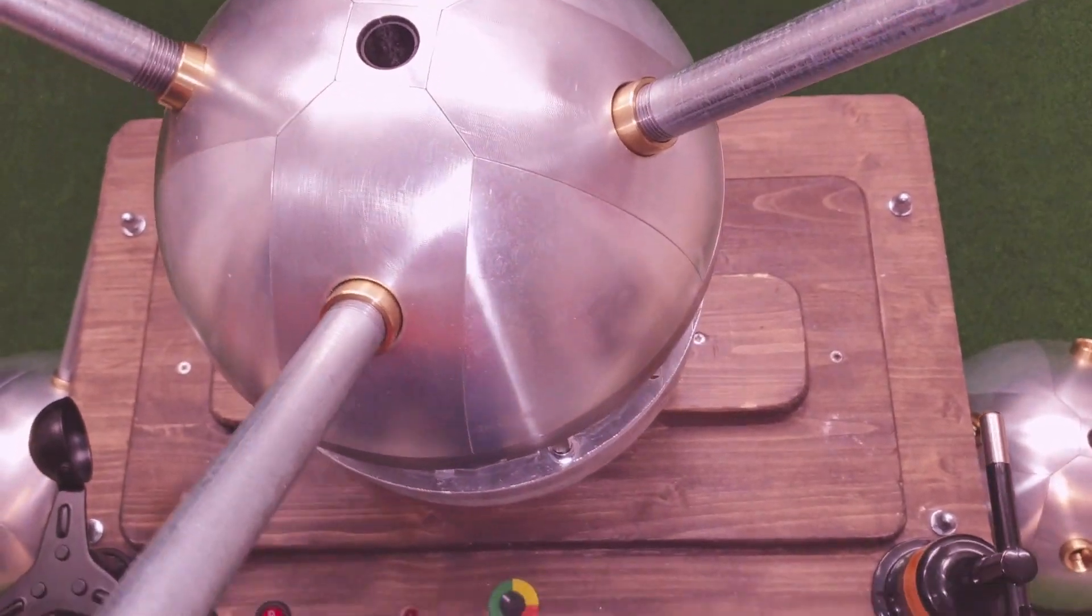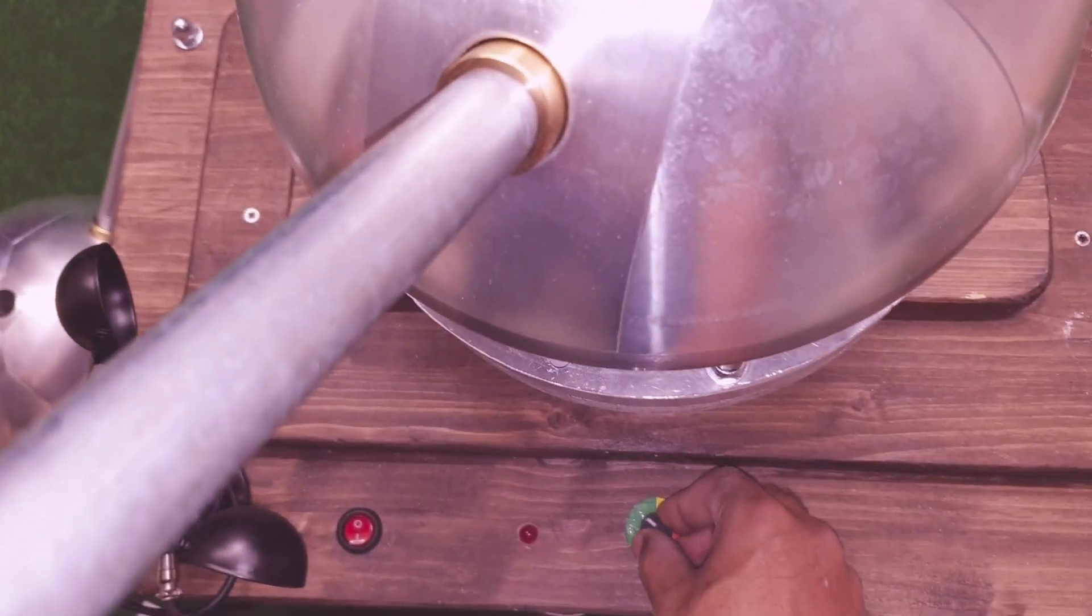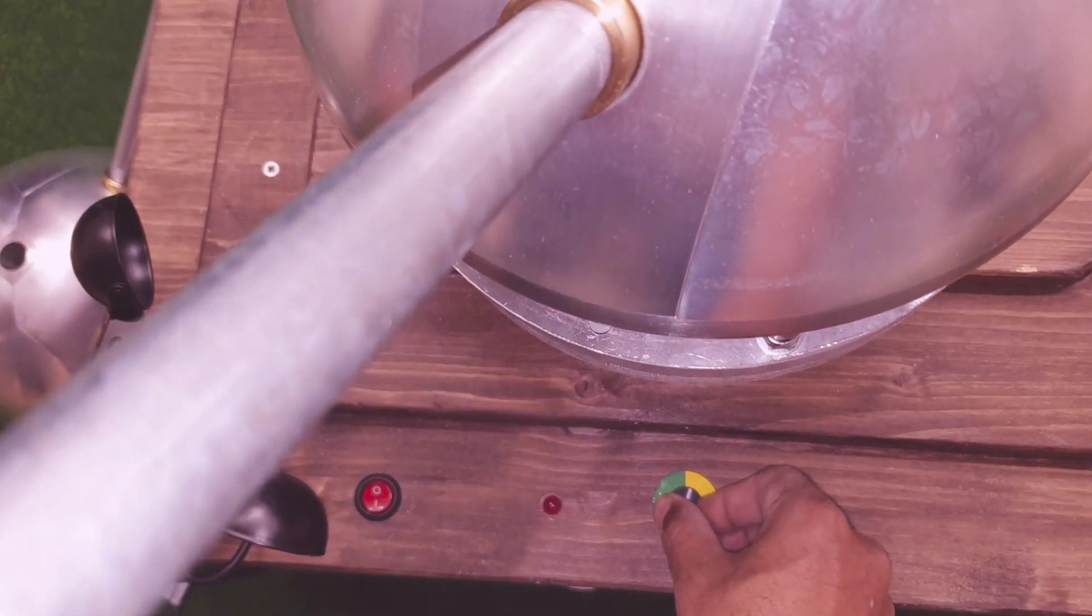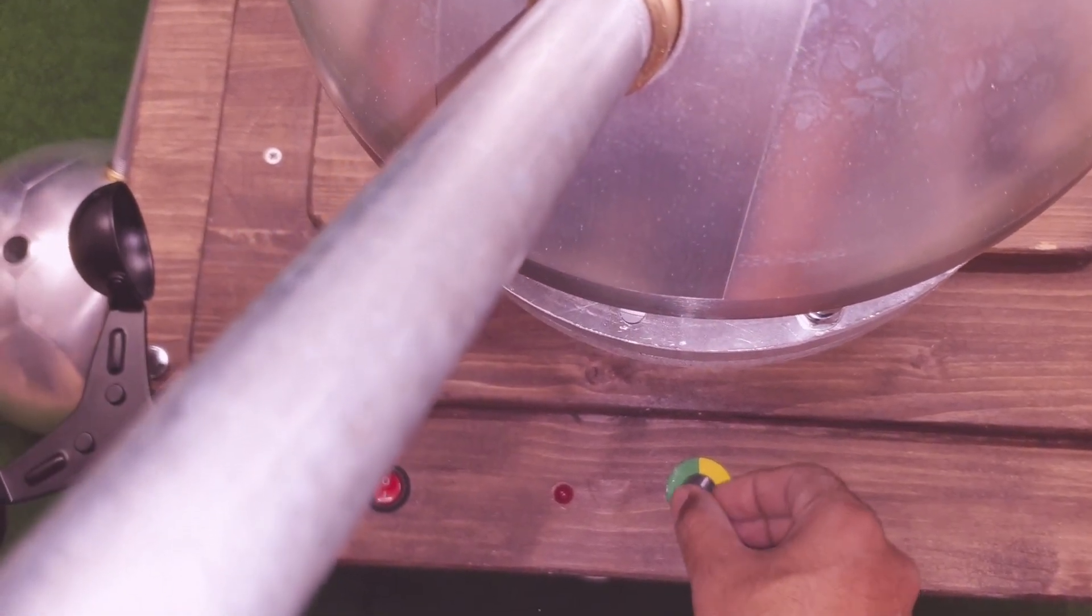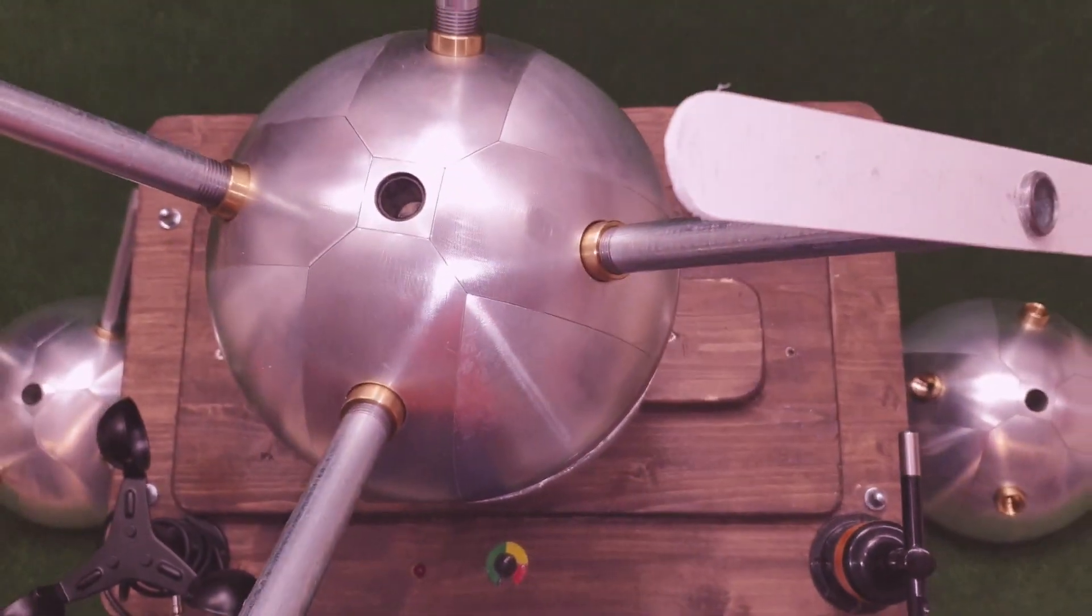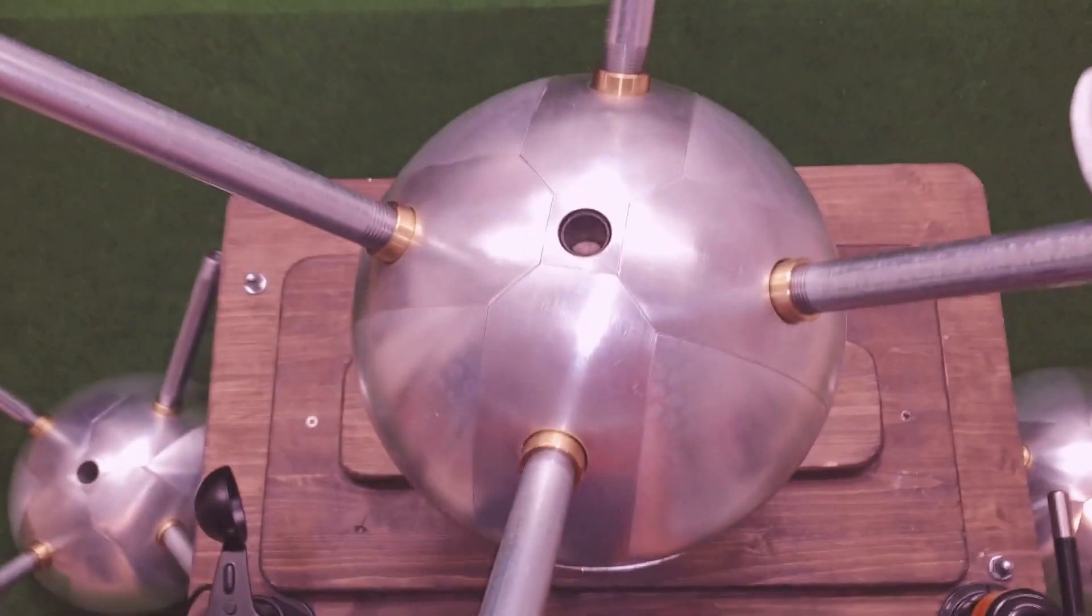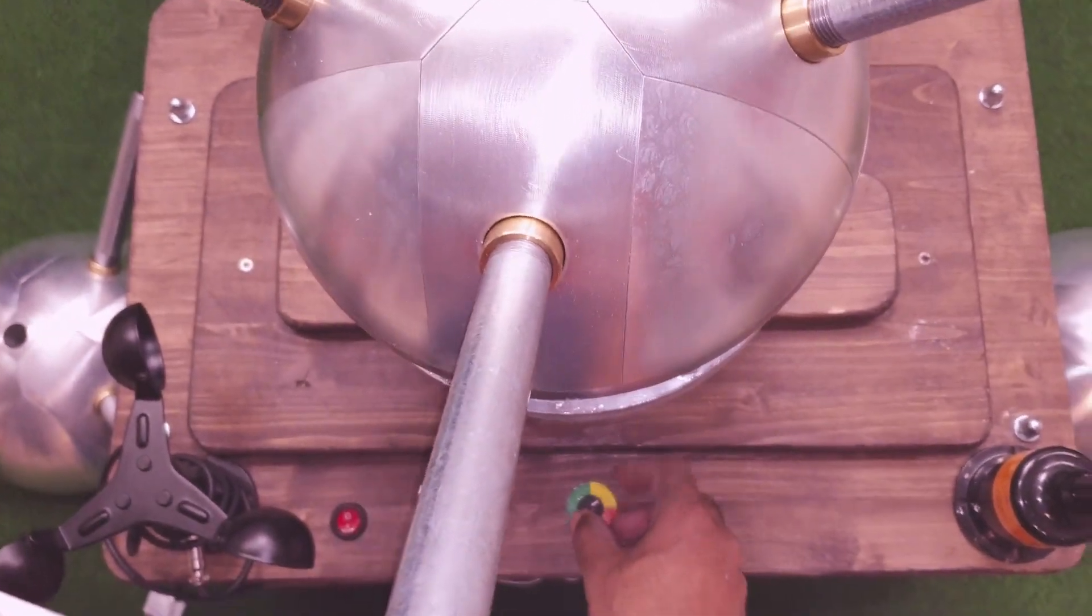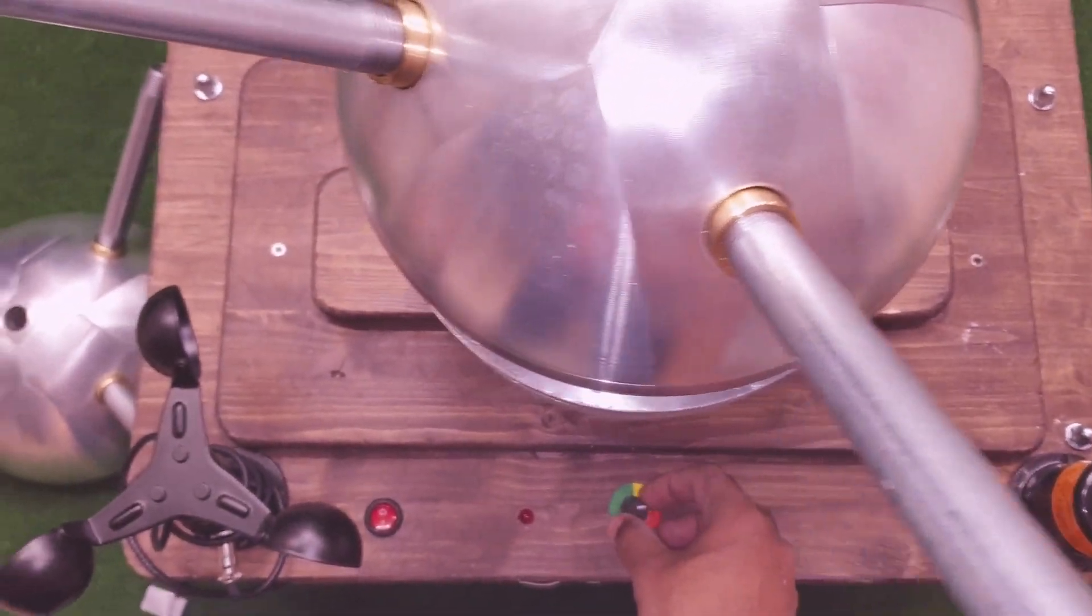As soon as the wind speed goes beyond a certain level into the orange or yellow range, then the blades will start feathering away and turning to 90 degrees. By the time it reaches the maximum load wind speed, the feathering has happened.